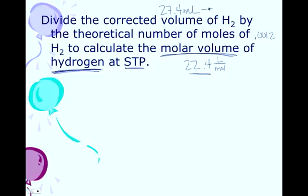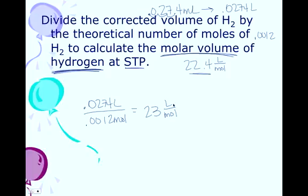So, you just go 1, 2, 3, and get 0.0274 liters. So, we're going to take that 0.0274 liters, divide it by our 0.0012 moles, and according to this data, we calculate out 23 liters per mole. Remember in science, close counts, and that's really close.